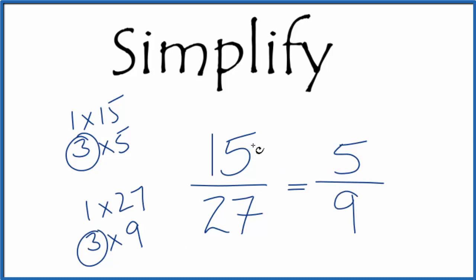So when we simplify 15 over 27, we end up with 5 ninths. And we can't reduce this any further. This is in lowest terms. These are equivalent fractions. If you divided 15 by 27 and 5 by 9, you get the same value.